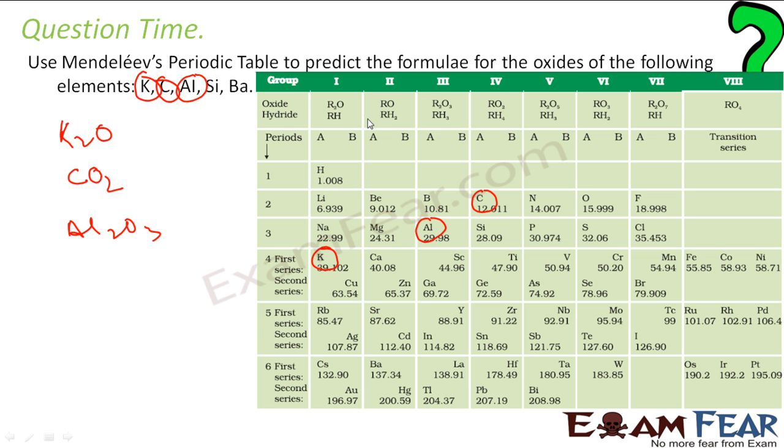Next is Si. Si is where? Group 4. Si has CO2 form, so it will be SiO2. Next is Ba. Let's see where Ba is. This guy, since this guy is in group 2 and it has RO form, so it will be BaO.